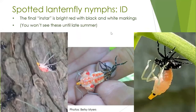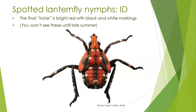Here are nymphs emerging into that last nymph life stage where they're red with black and white markings. Again, you can see they're very pale when they first emerge until the exoskeleton hardens. The final nymph stage looks very different from their earlier versions. You're not going to be seeing these until later in the summer.